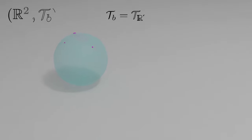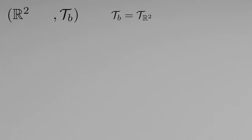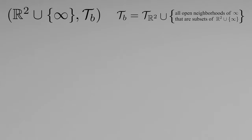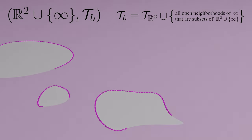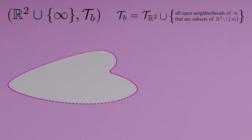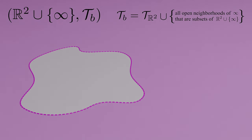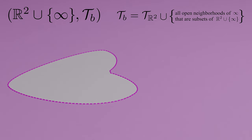We previously equipped R2 with tau B, and we said tau B was equal to tau sub R2, which we defined as the standard topology on R2. This time, since we're working with an extended plane, we're going to need an extended topology. We'll say that tau B needs to include all the open neighborhoods of the point at infinity that are subsets of our extended plane.